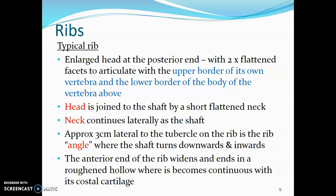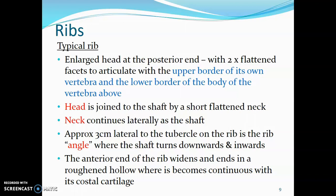A typical rib has an enlarged head at the posterior end, and this head has two flattened facets to articulate with the upper border of the body of the corresponding vertebra and the lower border of the vertebra above it. For example, the head of the second rib articulates with the upper border of T2 and the lower border of T1. The head is joined to the shaft by a short, flattened neck. The neck continues laterally as a shaft. Approximately three centimeters lateral to the tubercle of the rib is the angle, where the shaft turns downwards and inwards. The anterior end of the rib widens and ends in a roughened hollow where it becomes continuous with the costal cartilage.